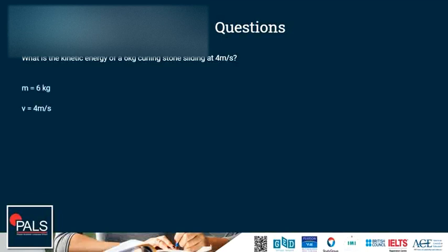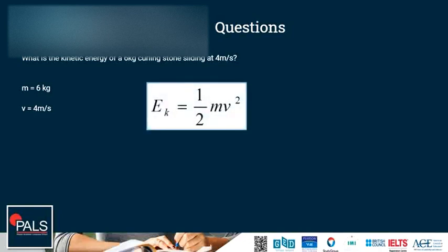So first, what do we know? We know that the mass is 6 kilogram and the velocity is 4 meters per second. We know that the formula for kinetic energy is a half times the mass times velocity squared.